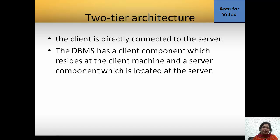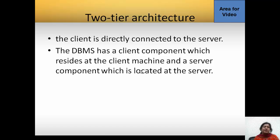There are two types of client-server architecture. The first type is a two-tier architecture in which the client is directly connected to the server with no middle layer. There can be multiple servers or a single server with multiple clients. The DBMS has a client component which resides at the client machine and a server component located at the server. For example, with Oracle, you install the Oracle client in the client system as well as Oracle server in the servers.